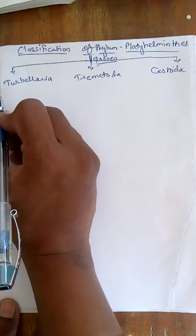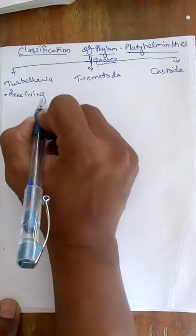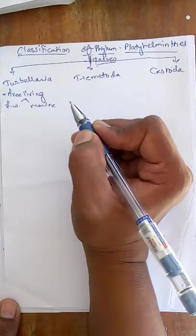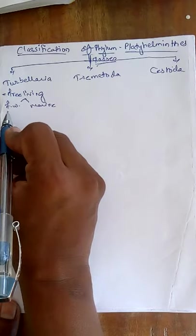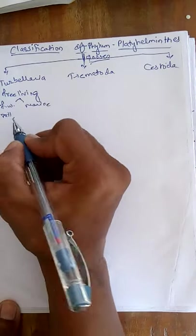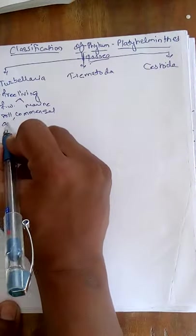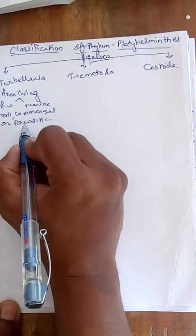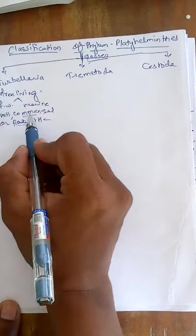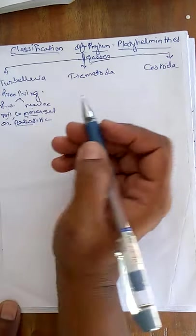Animals from Turbellaria are free-living and are present either in fresh water or marine water. Some of them are present in the soil, while some show commensal behavior and some are parasitic. So they are either free-living, commensal, or parasitic.